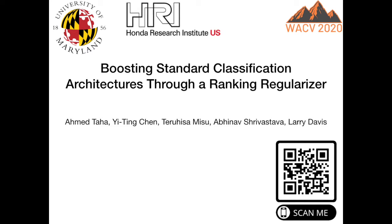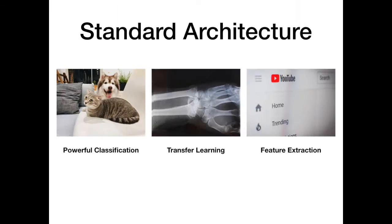We present a simple and efficient approach to boost performance of standard architectures through a ranking regularizer. Standard architectures are powerful classification models. With ImageNet, they enable fine-tuning and feature extractions for new domains like medical images and videos.